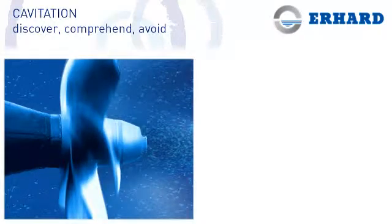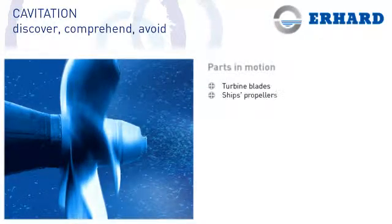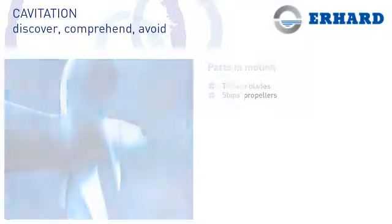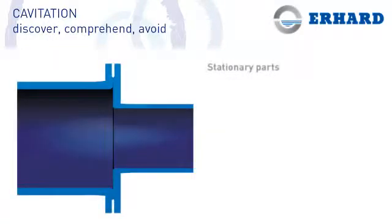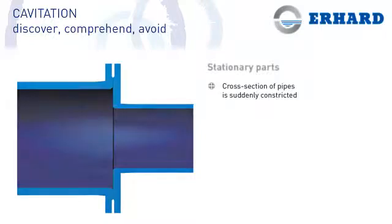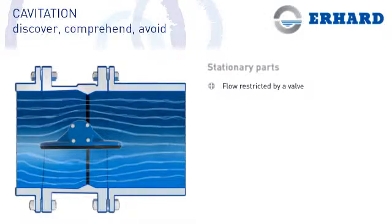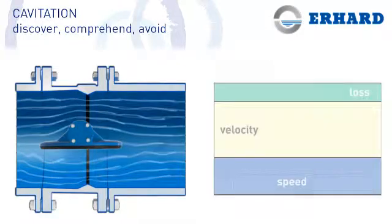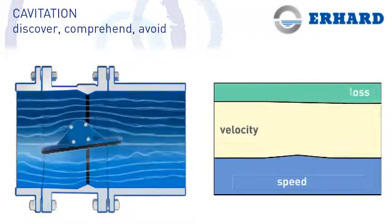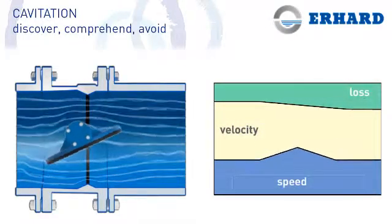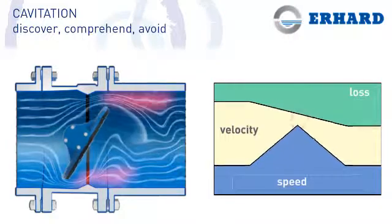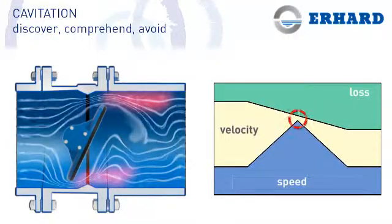Cavitation, for example, can occur in turbine blades or ship's propellers, but stationary parts are also affected by it — for example, if the cross-section of pipes is suddenly constricted, or if the flow is restricted by a valve. Strong velocity conversions are generally the cause of the pressure changes which initiate cavitation.